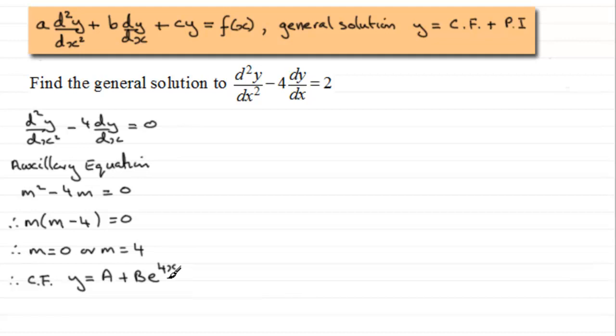Now, when it comes to choosing our particular integral, we would normally have chosen a constant, let's say we call it lambda, because we had a constant here. But the thing about this particular integral is that we've got a constant here. So we can't have just two exactly the same. So what we do in cases like this is we say lambda x. So our particular integral then is y = lambda x.